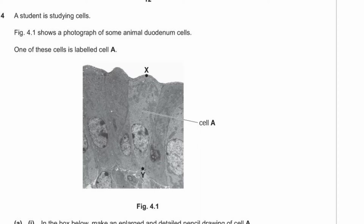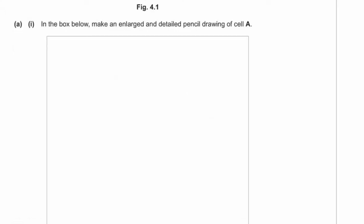Question 4: a student is studying cells. Figure 4.1 shows a photograph of some animal duodenum cells, and one is labeled cell A. A1: make an enlarged and detailed pencil drawing of cell A. When doing biology drawings, remember you are not an artist. Draw it in pencil with a sharp HB pencil. Draw nice smooth solid lines — a circle should be a smooth closed line, not a wobbly approximation.